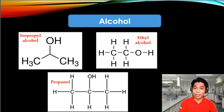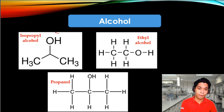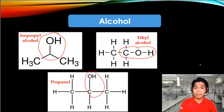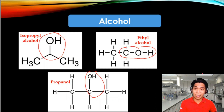Here are some examples: isopropyl alcohol, ethyl alcohol, and propanol are examples of organic compounds with alcohols as their functional groups. Just simplifying the OH attached to a carbon atom. Notice the names of the first two molecules have 'alcohol' in them because they have alcohols in their molecules. Likewise, the third molecule ends with the suffix '-ol' to represent the alcohol functional group.